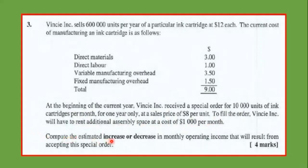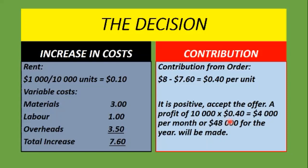Compute the estimated increase or decrease in monthly operating income that will result from the acceptance of this special order. Now first, we notice that the special order is below the cost of production, and just looking at it we might say don't accept the order. However, on computation it could prove otherwise. For the decision, you look at the increase in costs only.